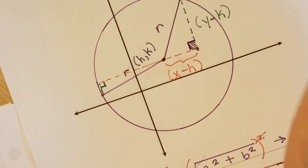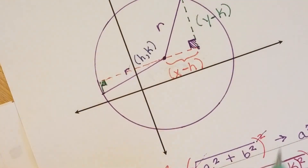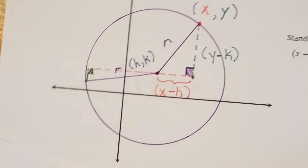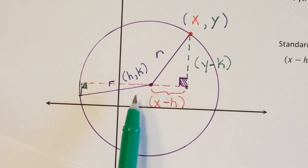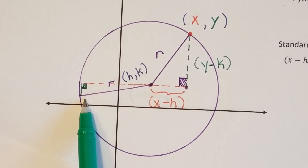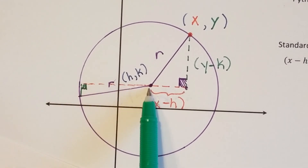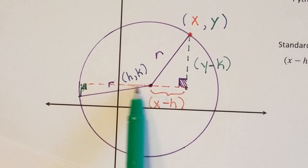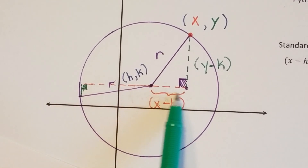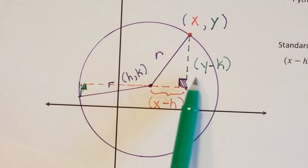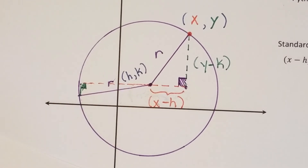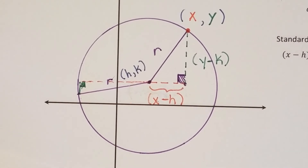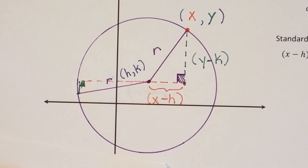And that would be my right triangle, with my right angle right there. So notice if I were to construct another triangle on my circle, the horizontal distance and the vertical distance would change, because this horizontal distance is longer and this vertical distance is much shorter. But r remains the same, because by definition of a circle that distance has to remain constant. So it still works.